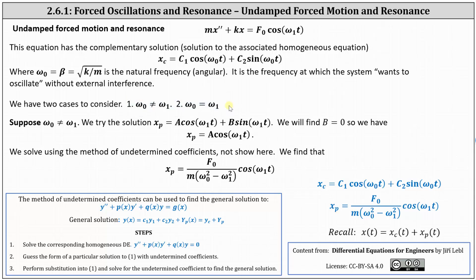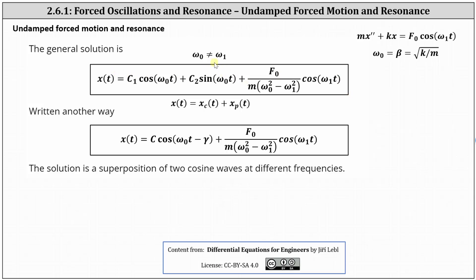Let's consider the first case where ω₀ ≠ ω₁. To find a particular solution, we let x_p = a cos(ω₁t) + b sin(ω₁t). However, we will find that b = 0, giving us x_p = a cos(ω₁t). Using the method of undetermined coefficients, we determine that a = F₀ / [m(ω₀² − ω₁²)], which gives us the particular solution x_p. Now that we have the complementary and particular solutions, we have the general solution when ω₀ ≠ ω₁, shown at the top, which can also be expressed in an alternate form shown below.